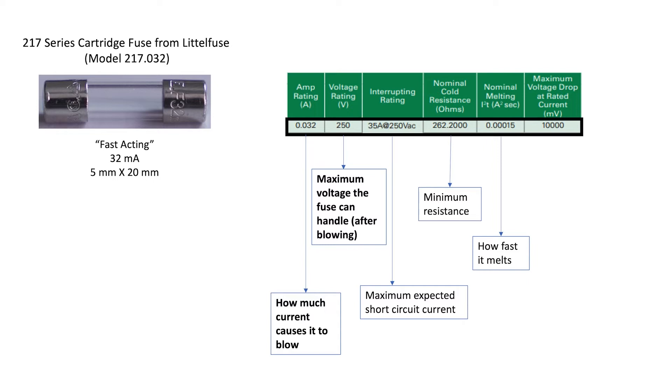The next parameter in the list here is the nominal melting I squared T. You could think of this as describing how fast it takes for a fuse to melt. You might not want a fuse to melt too quickly because in a lot of circuits, especially those containing capacitors and inductors, there might be temporarily, instantaneously, larger amounts of current flow. For example, when a capacitor is being charged up when you first turn a circuit on.